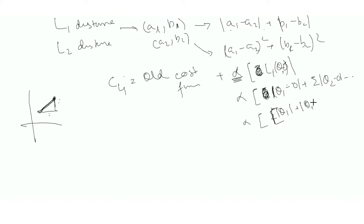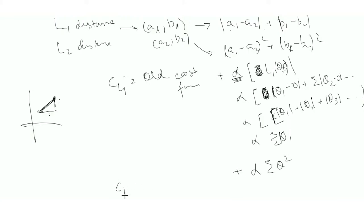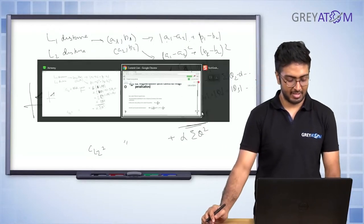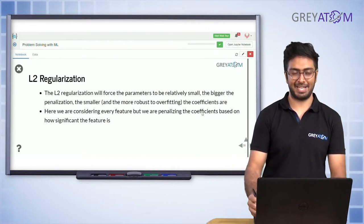So continuing: |θ₂| + |θ₃| and so forth — that's alpha times the summation of |θ|. Similarly, for L2 distance of theta you get alpha times the summation of θ². So C_L2 is the old cost function plus alpha times θ², and C_L1 is the old cost function plus alpha times |θ|. That's the basic difference between L1 and L2 regularization.